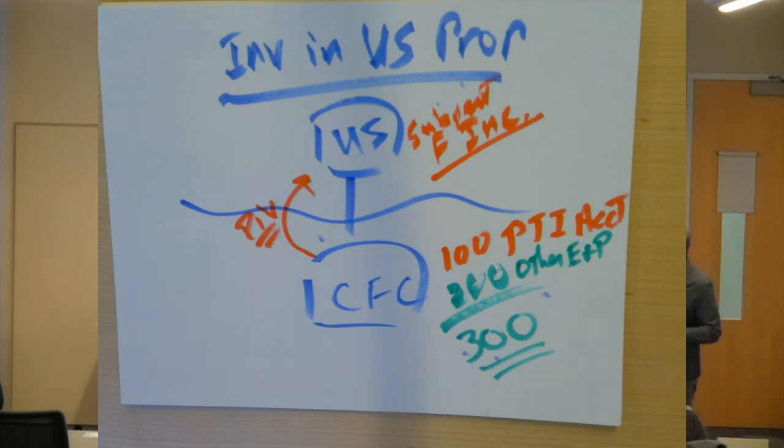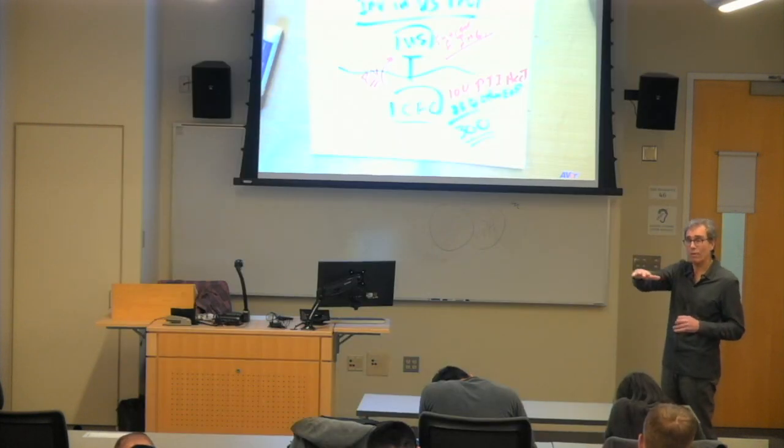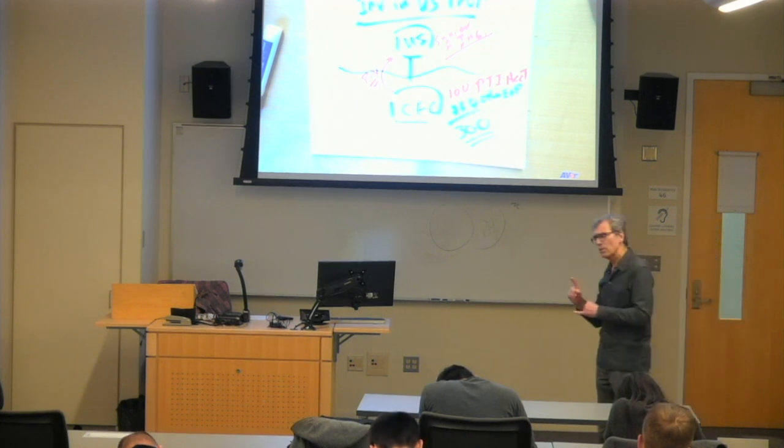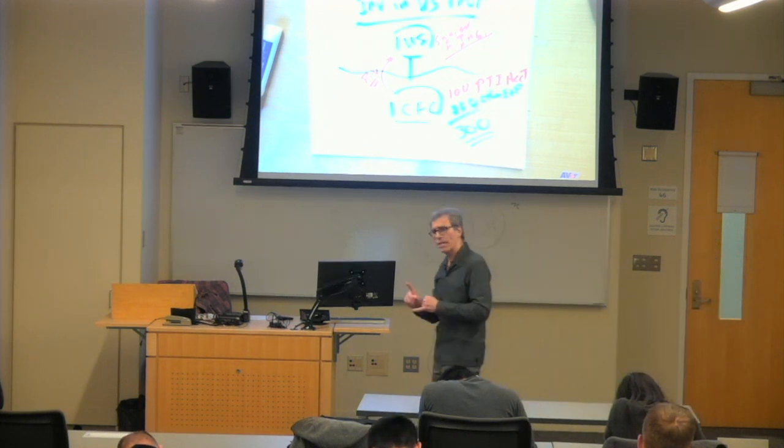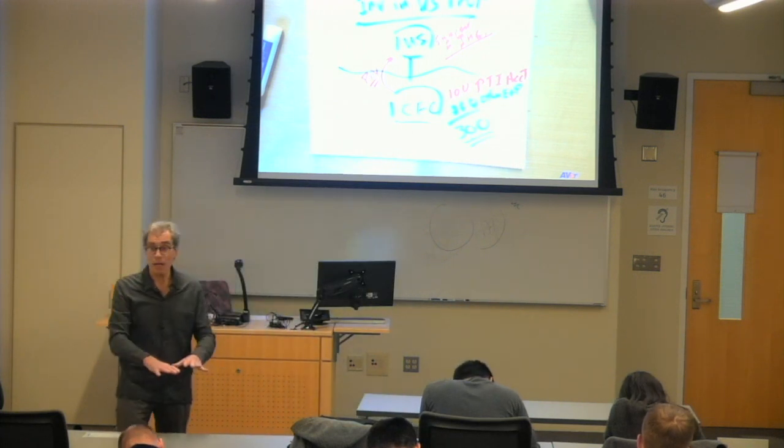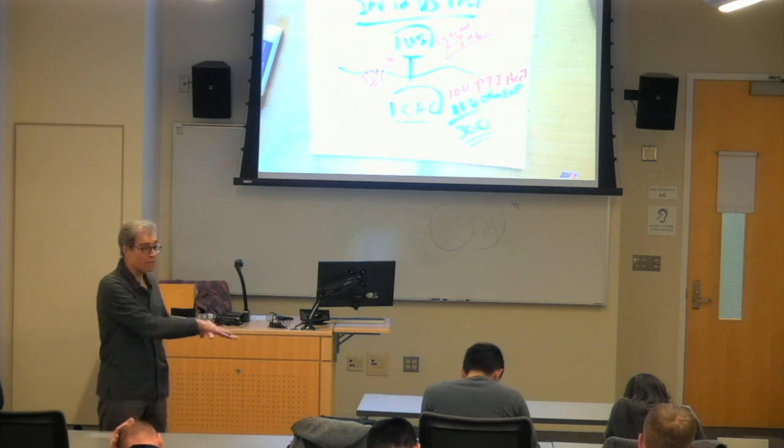Under the ordering rules in 959, when a dividend of 100 is paid, it comes first out of the PTI account. And as you'll see from information on the companies that you're doing the project on, surprisingly, they've left all these earnings, often just cash in the bank, in the CFCs.